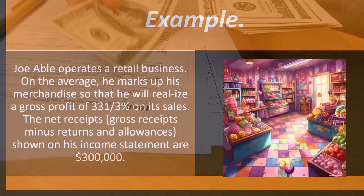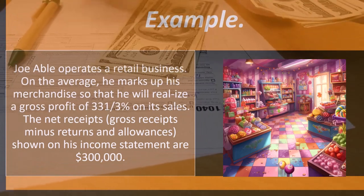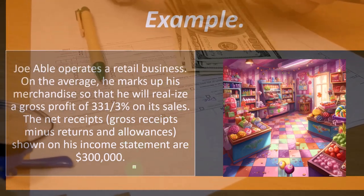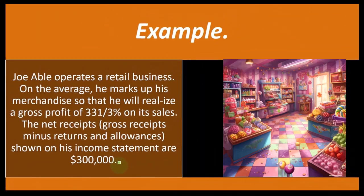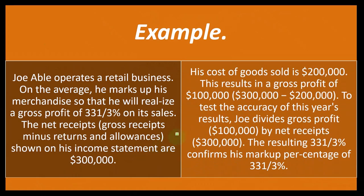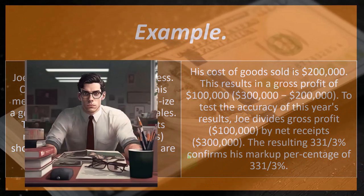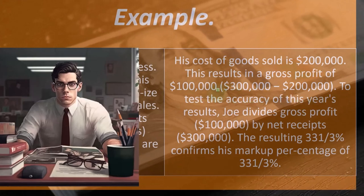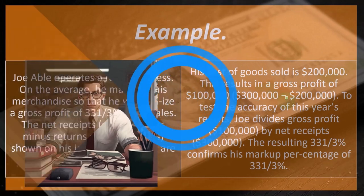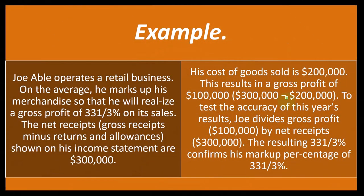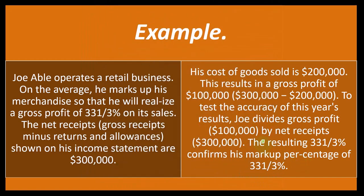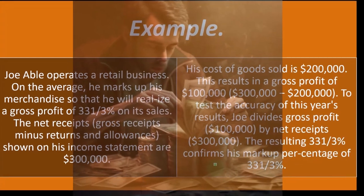For example, Joe Able operates a retail business. On average, he marks up his merchandise so that he will realize a gross profit of 33 and one-third percent on sales. The net receipts — gross receipts minus returns and allowances — shown on his income statement are $300,000. His cost of goods sold is $200,000, which results in a gross profit of $100,000. So sales minus cost of goods sold gives him $100,000 gross profit on $300,000 in sales.